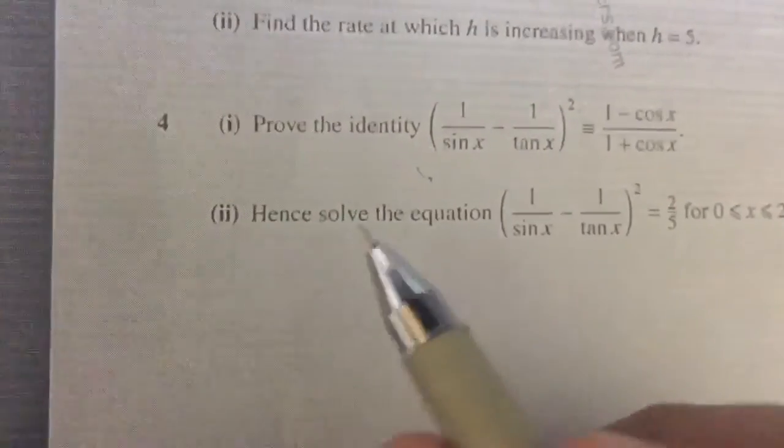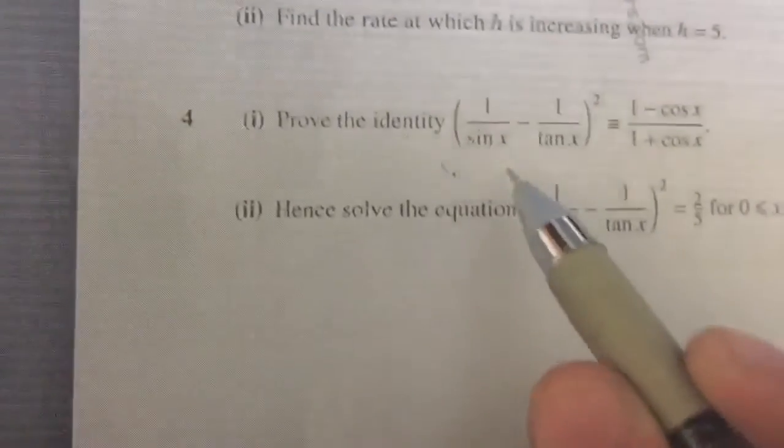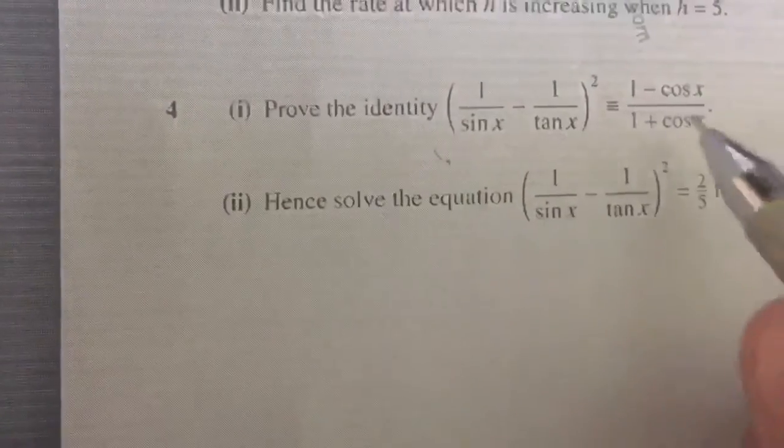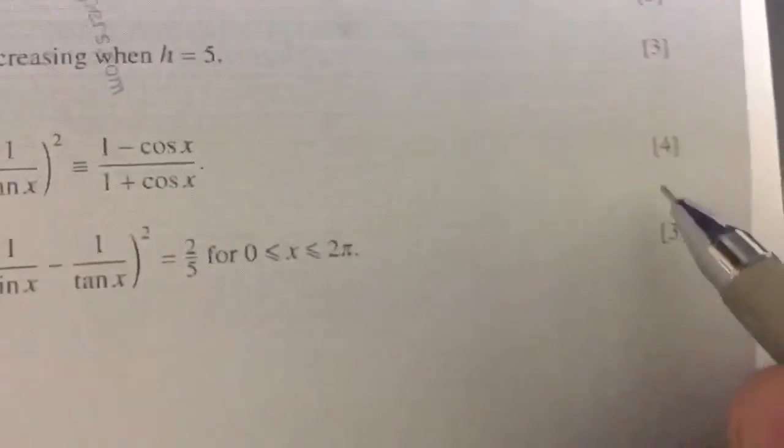The first part of question number 4 asks you to prove the identity (1 over sin x minus 1 over tan x) to the whole square equals (1 minus cos x) over (1 plus cos x). The question brings you 4 marks.